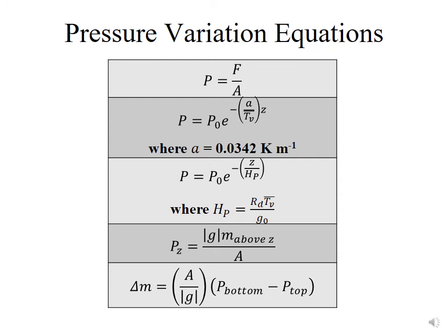Another way to look at this is the pressure at some altitude is equal to the force divided by area. Force is equal to mass times acceleration. So we have the mass above a certain height times the acceleration, which in this case is gravity. Another way to think about this is the amount of mass in a given layer is equal to the area of that layer divided by gravity times the pressure at the bottom of the layer minus the pressure at the top. And we will get a lot of practice using these types of equations in class.